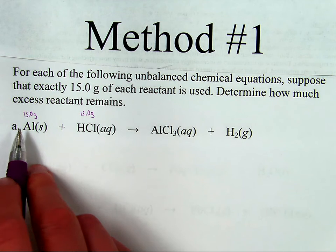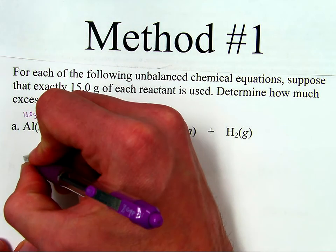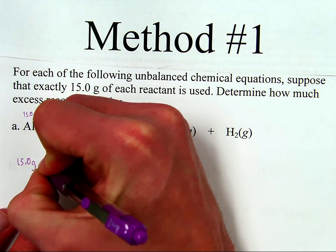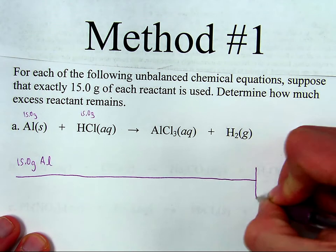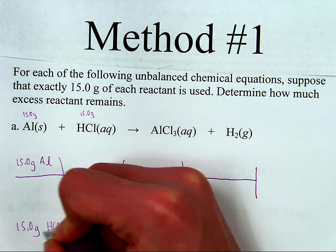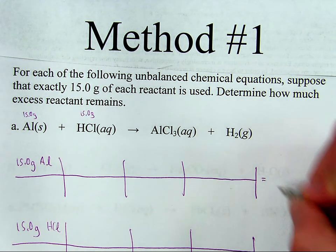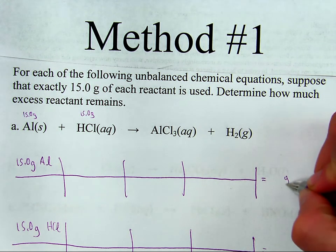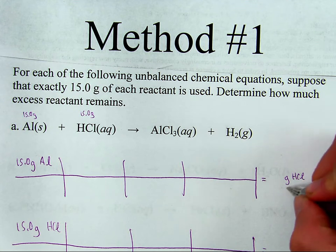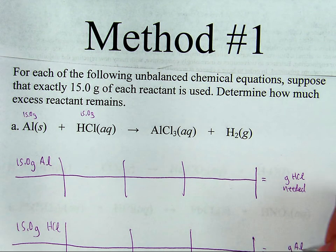Method number one — I'll call it the comparative method. What I'm going to do is find out how much each reactant needs of the other reactant and see how what I have compares to what I need and where the excess is. So I'm going to take 15.0 grams of aluminum for one calculation, and 15.0 grams of HCl for the other calculation. I need to find how many grams of HCl are needed to use up all 15 grams of aluminum, and how many grams of aluminum are needed to completely react all 15 grams of HCl.